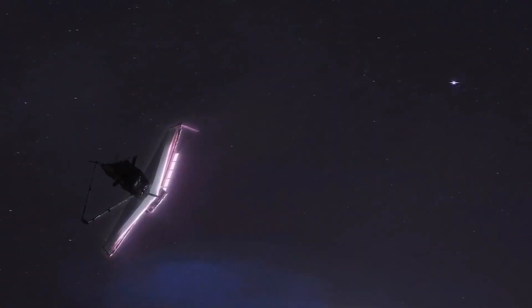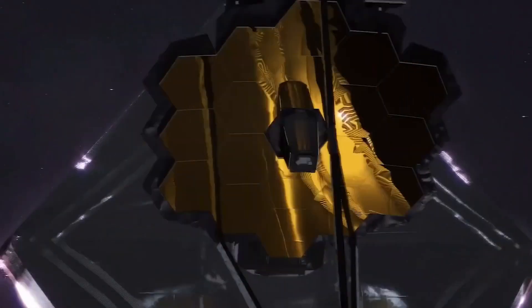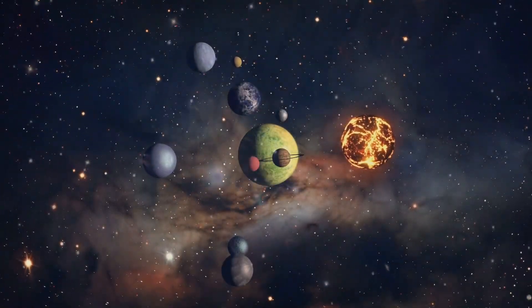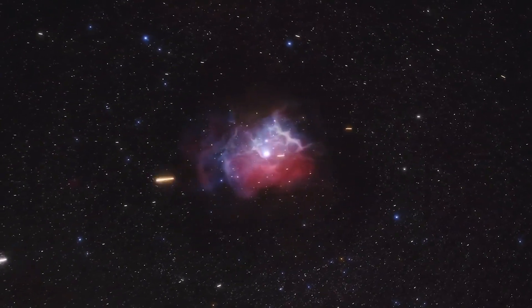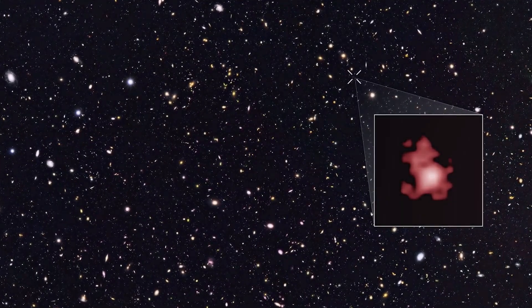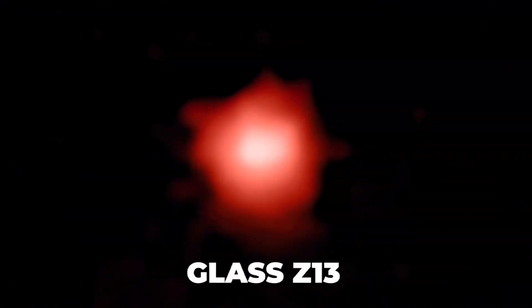There are several images captured by the Webb Telescope, and they concern various bodies – planets, asteroids, and clusters of galaxies. But there is a very particular one. The galaxy that you see has a tiny red blob in this image, and has been dubbed Glass Z13.